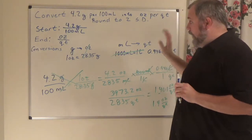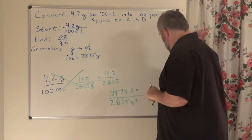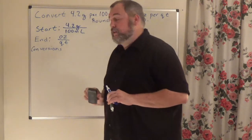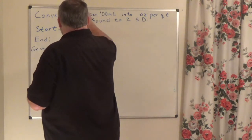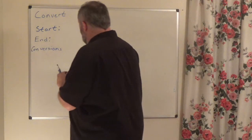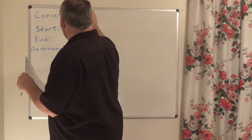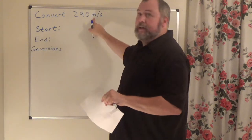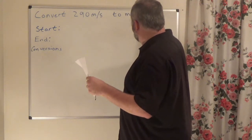I'm going to erase the board and do the last big conversion problem. This next one is also a very good test question — hint, hint, nudge, nudge. We are going to convert 290 meters per second to miles per hour, and round to correct significant digits.